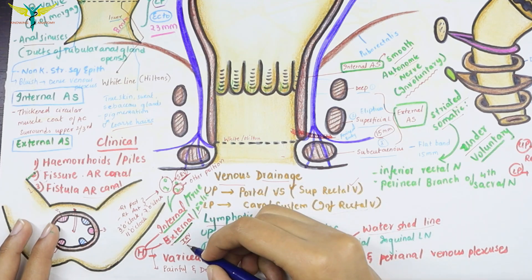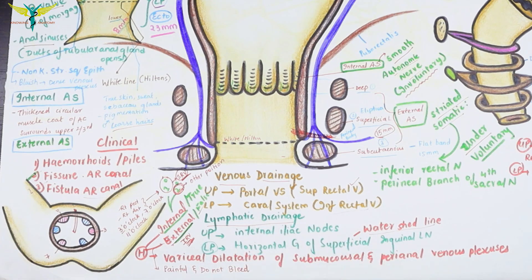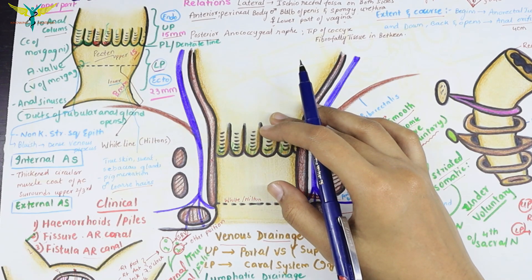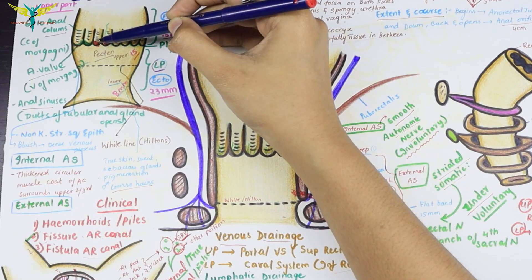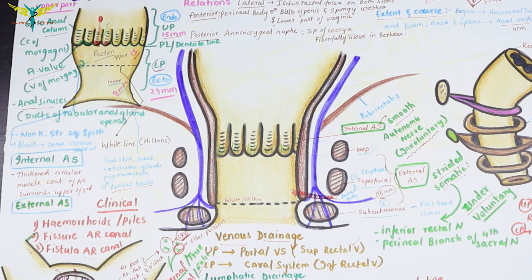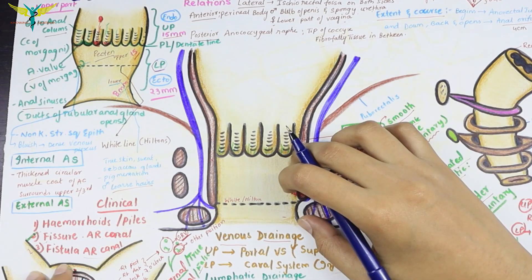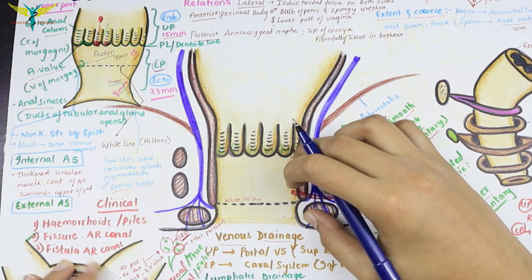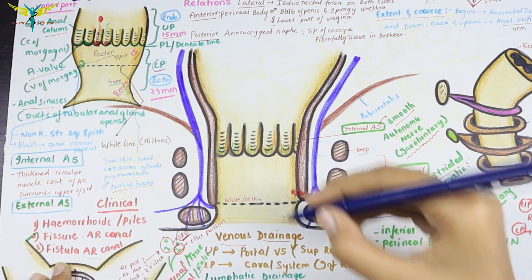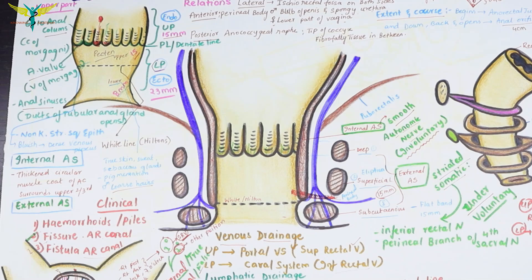External piles are false piles — saccular dilatations of the inferior rectal vein. They are very painful and do not bleed during straining. Fissures in the anal canal refer to cuts formed in the anal valves (valves of Morgagni) due to passage of hard fecal matter, causing severe pain. Fistula in the anal canal is an opening from inside to outside, mainly caused by rupture of an abscess around the canal. The abscess opens spontaneously and the tract becomes epithelialized.